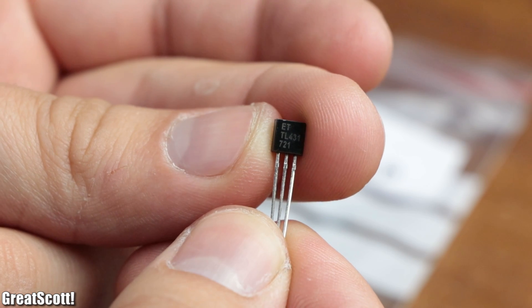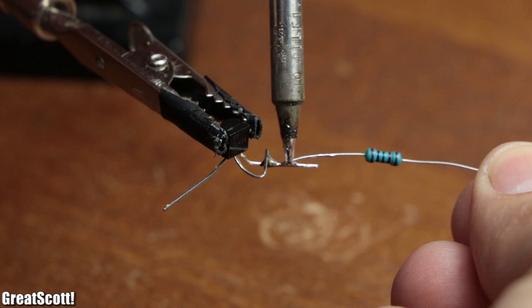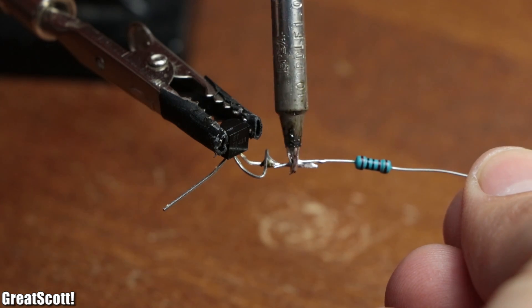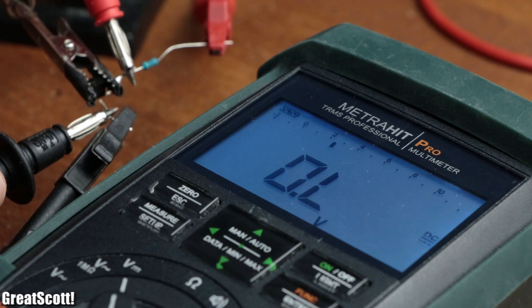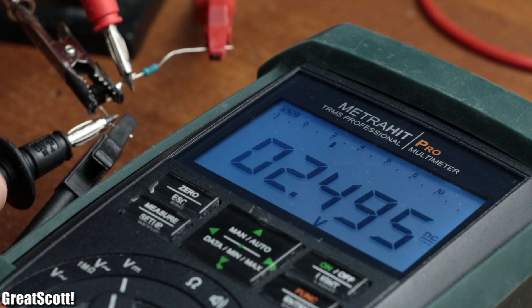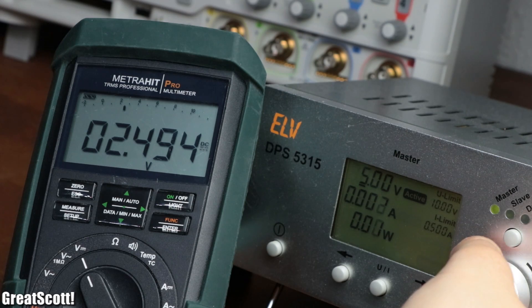Later I will be using a TL431 in series with a 1 kilo ohm resistor in order to create a stable 2.495 volts reference voltage, which stays constant even when the input voltage of the circuit varies.